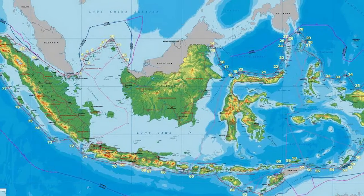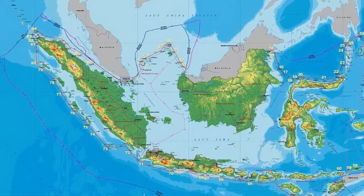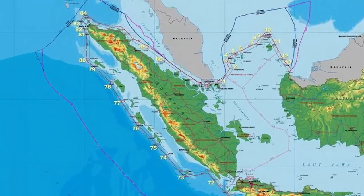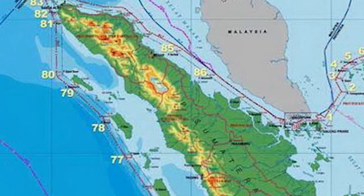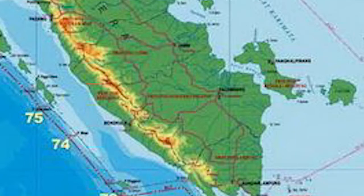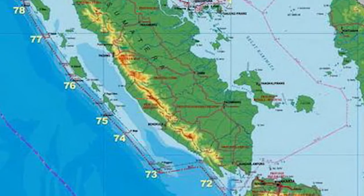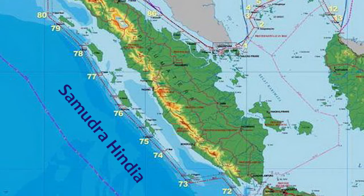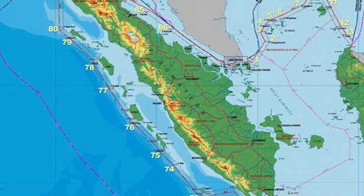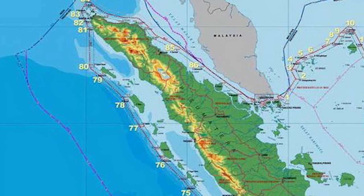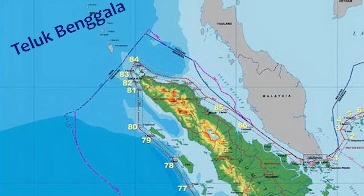Batas-batas Pulau Sumatra: Sebelah timur: Selat Malaka. Sebelah selatan: Selat Sunda. Sebelah barat: Samudera Hindia. Sebelah utara: Teluk Benggala.